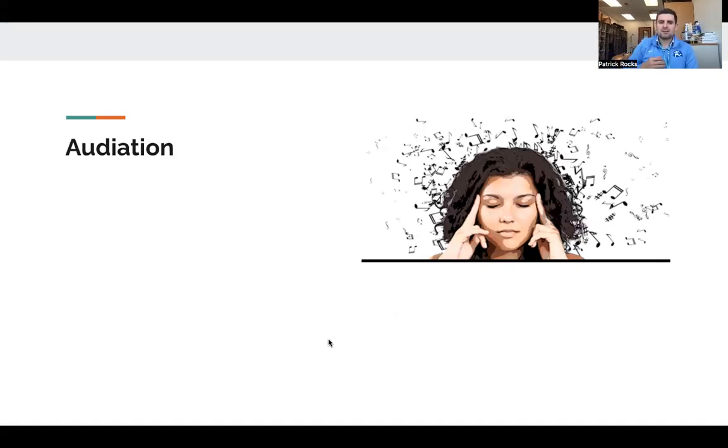To start, one of the big ideas of the Gordon music learning theory is this idea of audiation. This is actually a term that Gordon himself created, and essentially it's thinking in music. The idea of audiation is to have a thought, and then audiation audio has to do with sound, so the idea of thinking in music or using the brain in the process of music making. Sometimes it's considered to be this idea of just inner hearing or hearing sounds in your head, or being able to sing a song in your head not using your ears or your voice or an instrument.